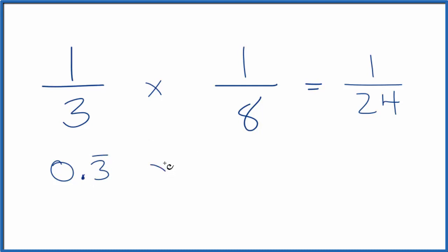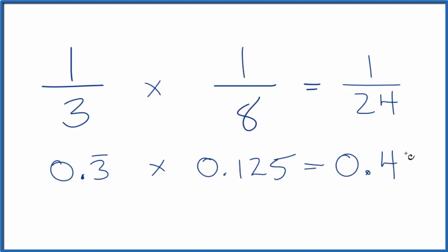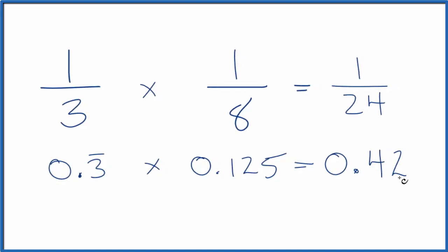We multiply that by 1 over 8. That's 0.125. So 0.3 repeating times 0.125, that gives us 0.42, and this last number is rounded.